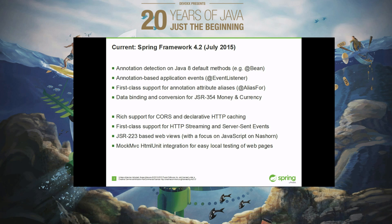In 4.2, for example, we have support for default methods across the framework. We detect annotated Java 8 default methods. We have a rich event listener model with per-method callback — an annotated event method model in 4.2 — with ordering, with an option to combine it with asynchronous execution. We also spent significant effort on a revision of our annotation alias model, our composable annotation model, where you are able to combine out-of-the-box annotations into custom annotations of your own. More on that in my modern Java component design session afterwards.